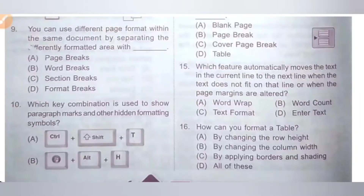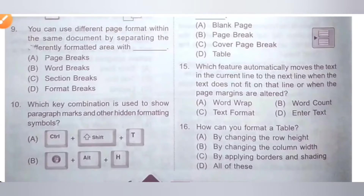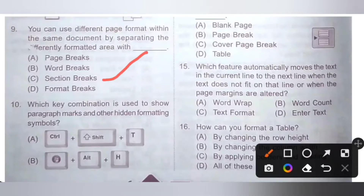Ninth question: you can use different page formats within the same document by separating the differently formatted areas with a blank. The options are A: Page break, B: Word break, C: Section break, D: Format break. You can use different page formats within the same document by separating the areas with a Section break. Option C is the correct answer.